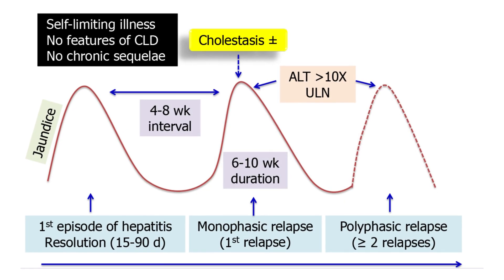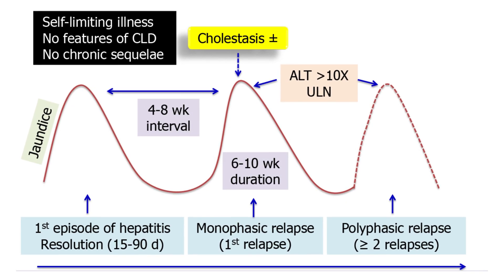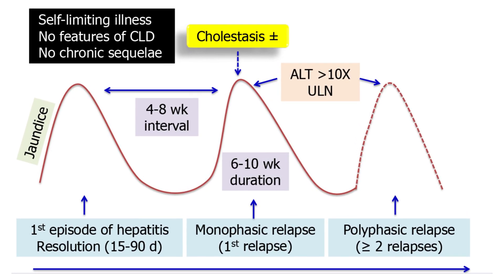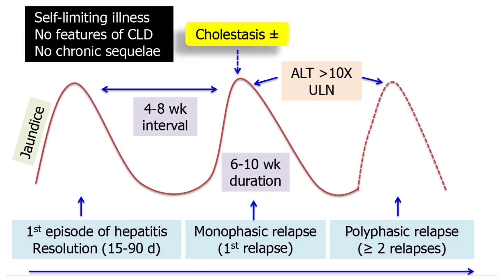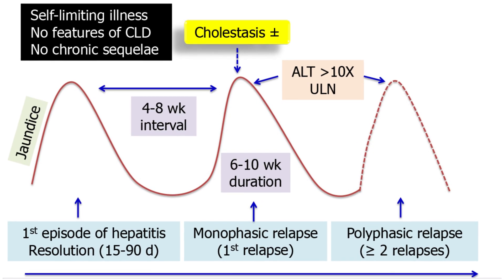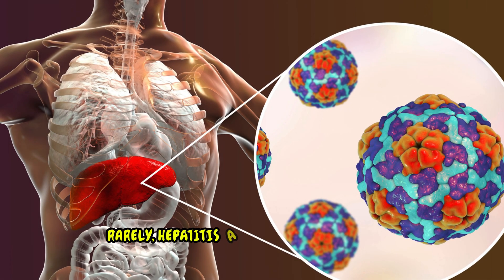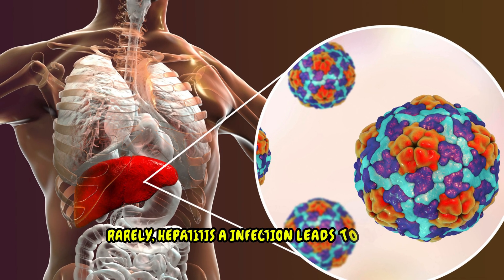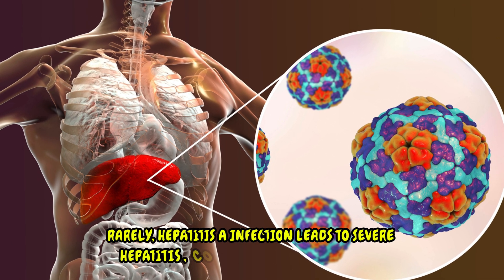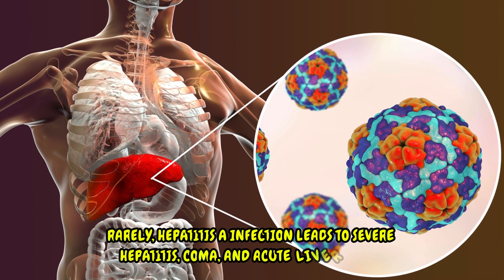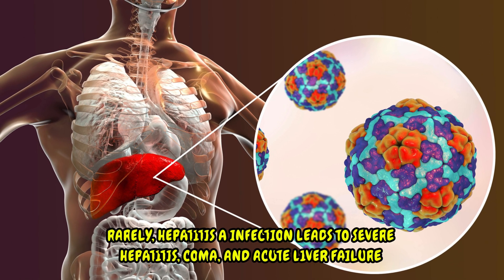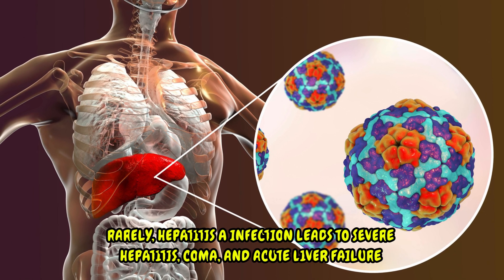Occasionally, a biphasic course occurs where jaundice returns with a prolonged course of seven to twenty weeks. Rarely, hepatitis A infection leads to severe hepatitis, coma, and acute liver failure.